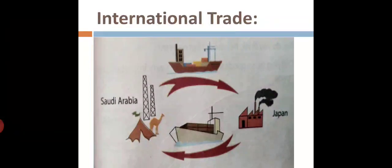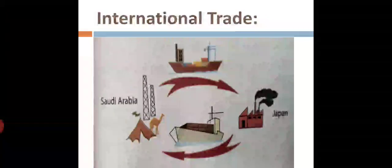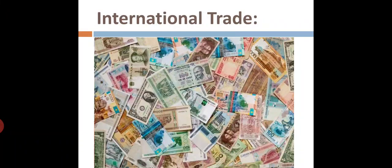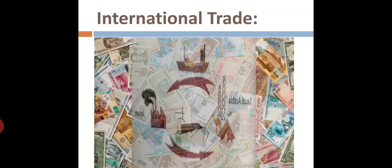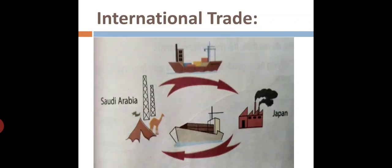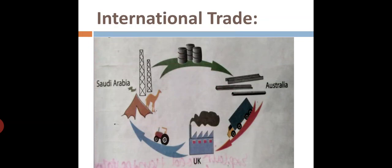Today this problem is solved by agreeing to use one currency for international trading, the most common being the US dollar. Sometimes the trade is direct. Japan needs oil for its industry but has none of its own. Saudi Arabia has plenty of oil but does not have an industrial base producing heavy machinery, motor cars, and electronic goods. The obvious answer for these two countries is to exchange goods with cash if the two do not balance. Sometimes the trading is a bit more complicated, as shown in the drawing below. This drawing you can see on your screen as well.